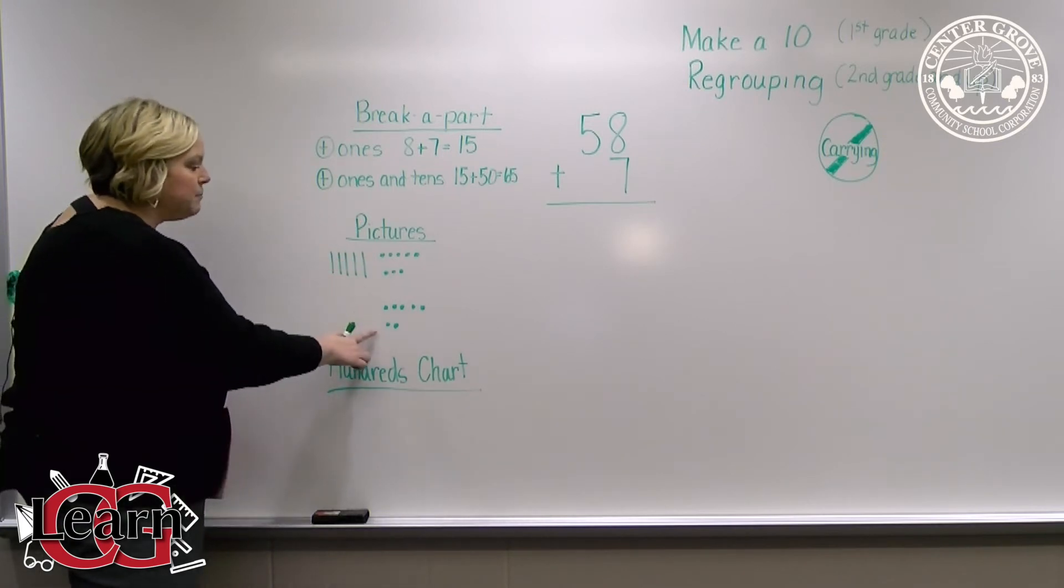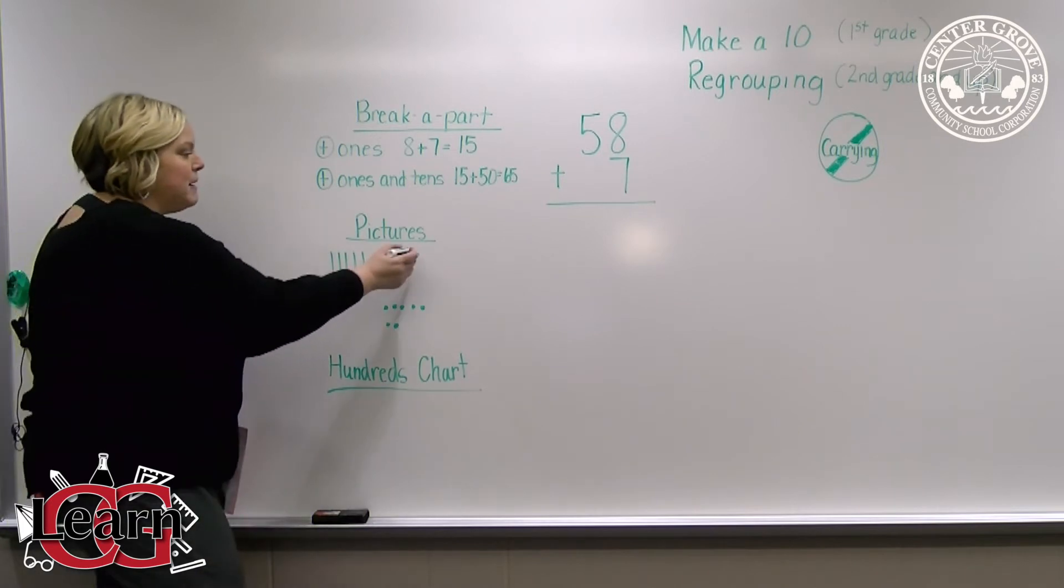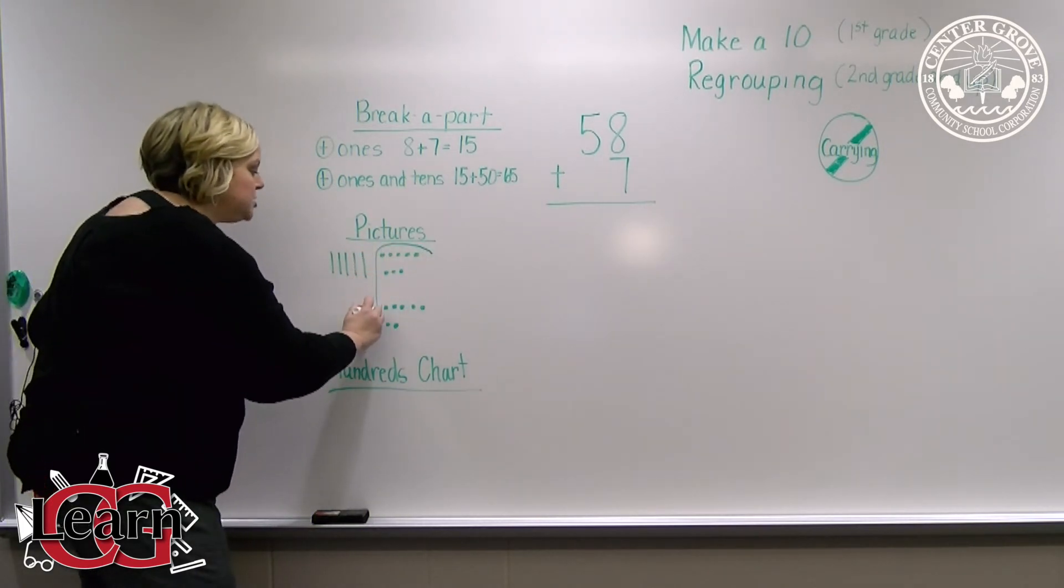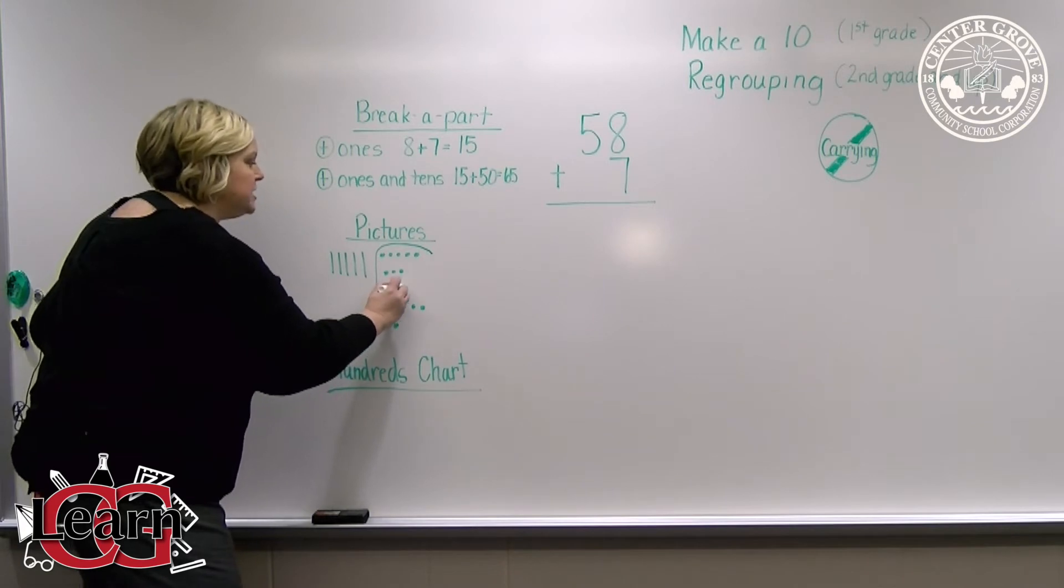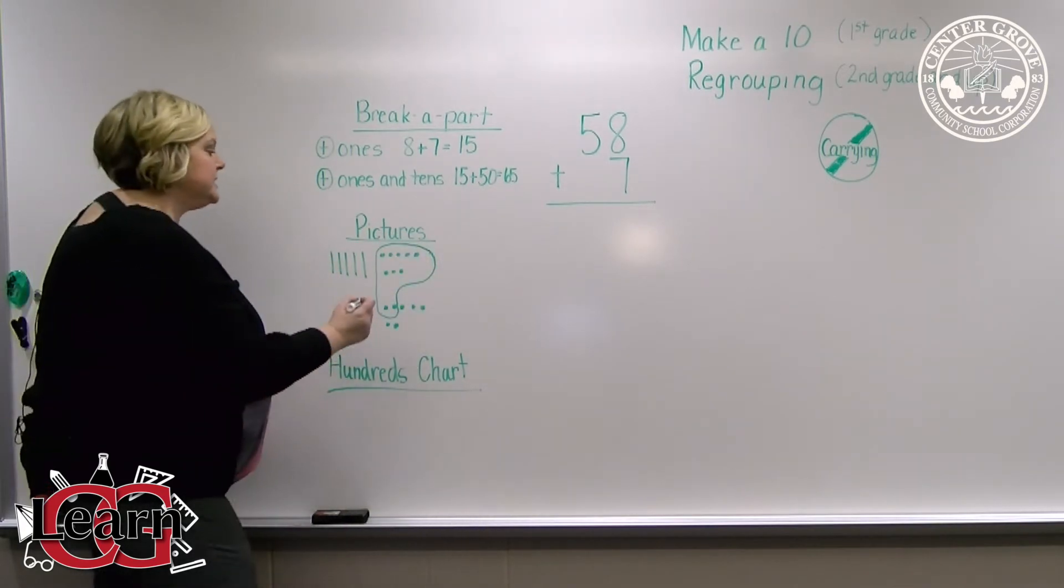I have my 58 plus seven. I'm going to take my eight up here plus two more and I'm going to circle it. And what I just did was make a 10.